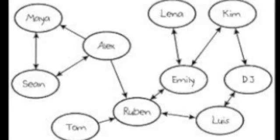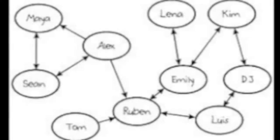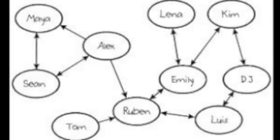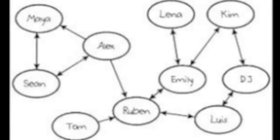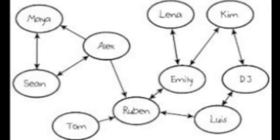Those individuals with very few or no choices at all are called isolates. Here we see poor Tom located at the bottom left-hand corner without a soul in sight that's willing to work with him. So we know what a star and an isolate are in the sociogram. Now, what about those individuals who choose to work with each other? They are known to have made a mutual choice. Take a moment to view the mutual lines in this illustration. It's good to see that Sean and Maya, Ruben and Emily, Kim and DJ, and a few others are on the same page of wanting to work with one another.